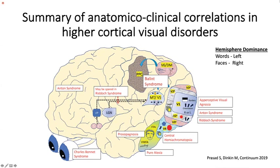An additional entity not yet mentioned: if there is a lesion in V5 or the medial temporal area, the person may stop perceiving moving stimuli — this is akinetopsia. These people see moving stimuli as stationary objects; seeing a moving car, they feel it is jumping from place to place rather than moving smoothly. This disorder is very rare.